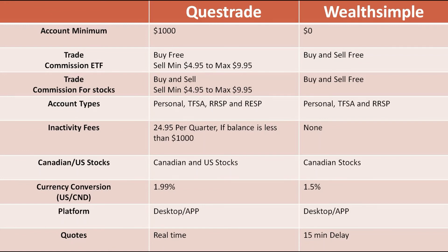Next is stock quotes. On Questrade, pricing is real-time — as soon as the price goes up or down you can see it immediately. On Wealthsimple there is a 15-minute delay. What I do when placing an order on Wealthsimple is check the price on the Yahoo Finance app, which reflects real-time prices. You can also use a limit order to set the exact price you want to buy at, so that if there's a price fluctuation you still pay only what you intended.